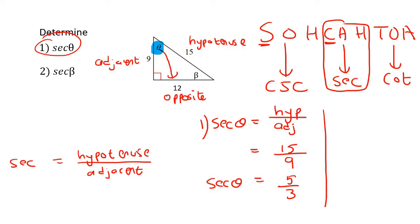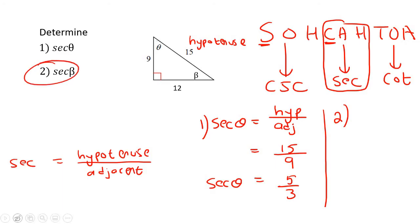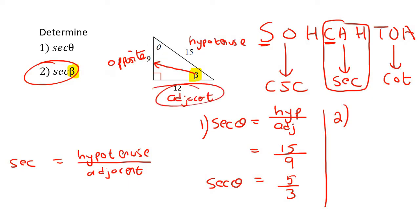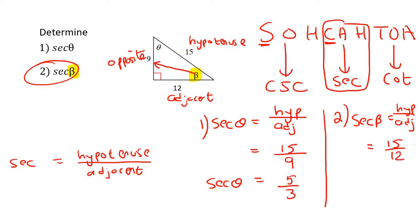For number two, we need to restart because we are now looking at a totally different angle. Remember that the hypotenuse is always opposite the 90, so that won't change. But now we are looking at angle beta. The side opposite beta is called the opposite, and the other one is the adjacent — notice that these two have switched positions. We know that sec is always hypotenuse over adjacent, so that's going to be 15 over 12.